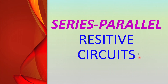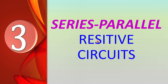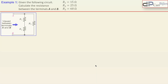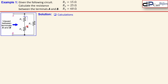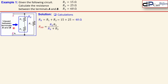The final part covers the series-parallel combination, which is a bit more complicated. In the first example we have three resistors R1, R2, and R3, and we need the resistance between terminals A and B. Working step by step: R1 and R2 form a series branch, which we call Rx. So Rx = R1 plus R2 = 15 plus 25 = 40 ohms. Effectively we now have a single 40 ohm resistor in parallel with R3.